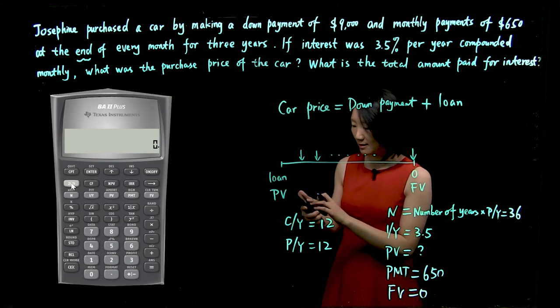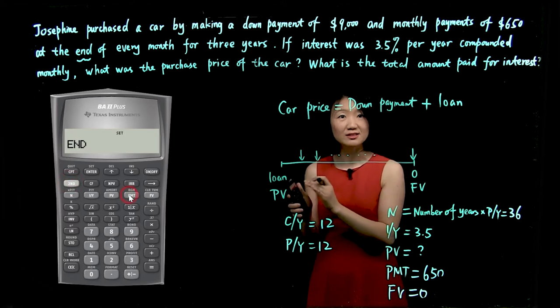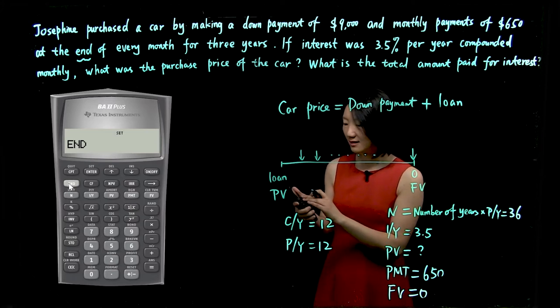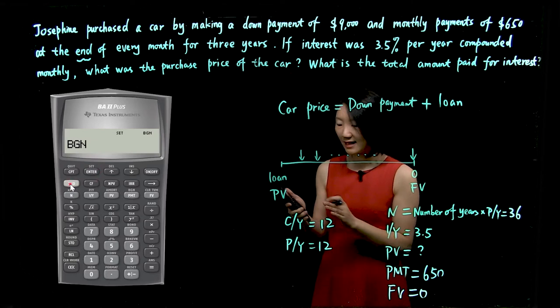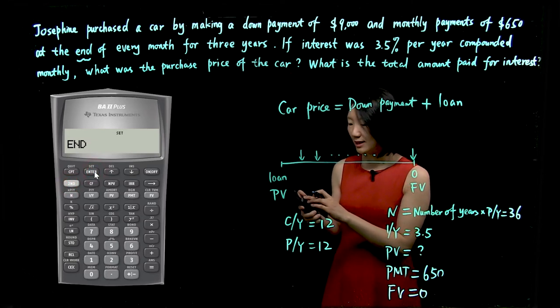So go to second BGN, you'll see my calculator is already at end mode. If you need to change it, go second set, change to BGN, begin mode, and second set again. Now I'm back to end mode. We can do second quit, exit.